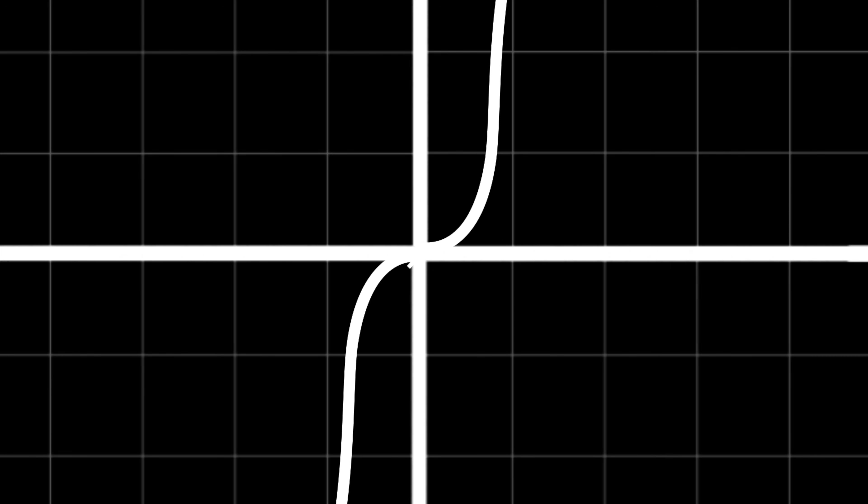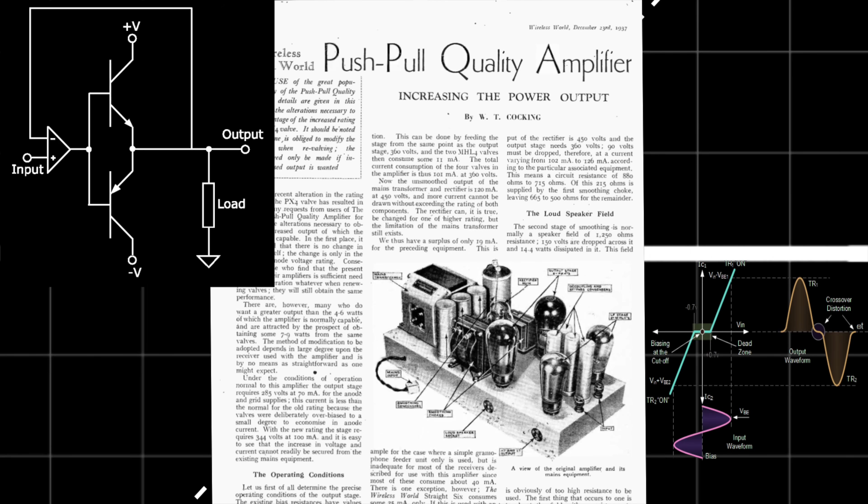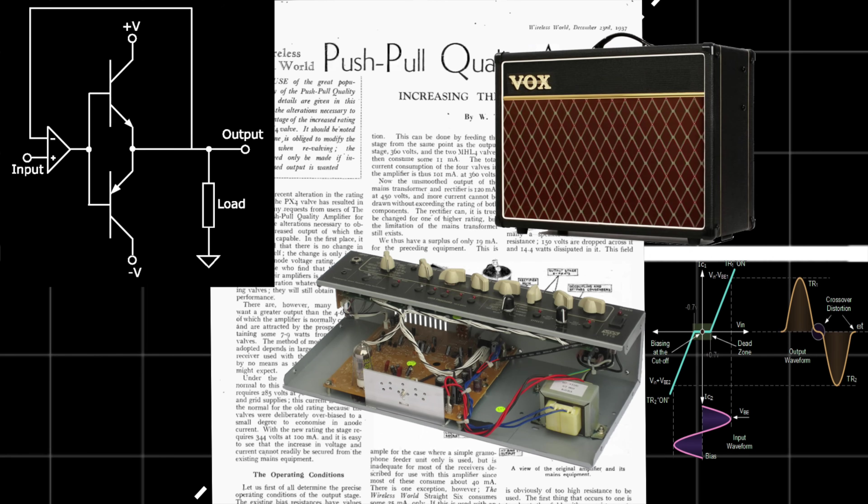This is called crossover distortion, and it was a big problem in push-pull amplifiers found in early solid state guitar amps that use transistors.